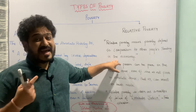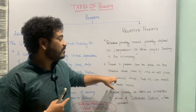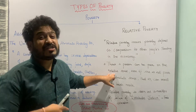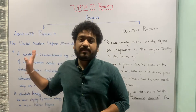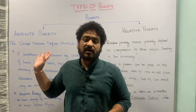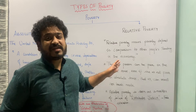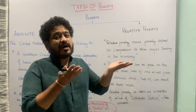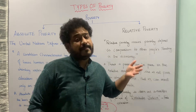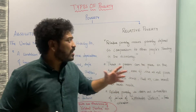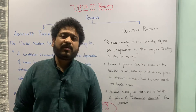A person can be relatively poor even if he or she is not absolutely poor — in absolute terms he or she is able to meet basic needs, but in relative terms he or she may not be on par with the individual to whom we are comparing them. This is how you can look at both absolute poverty and relative poverty.